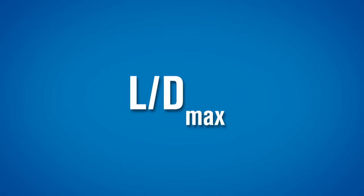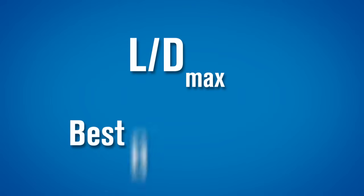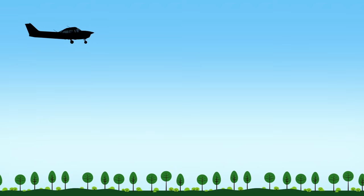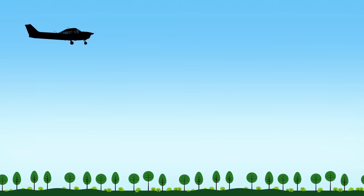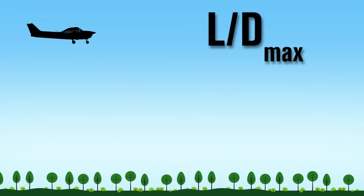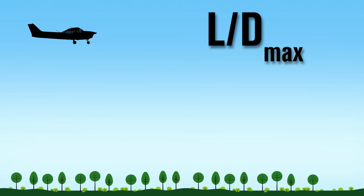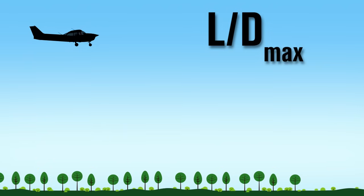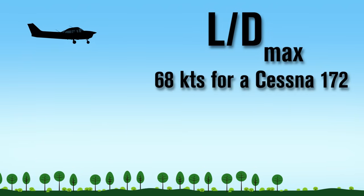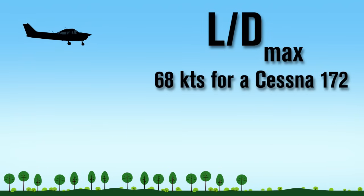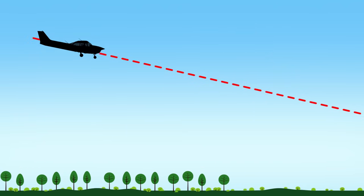This value is called L over D max, or as pilots know it, our best glide speed. Pilots should be familiar with this number because in the unlikely event of an engine failure, this is the speed at which they'll want to glide down to the ground.